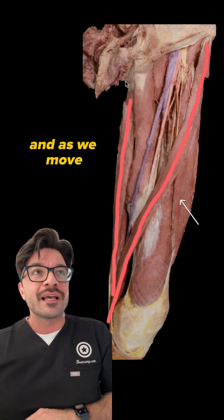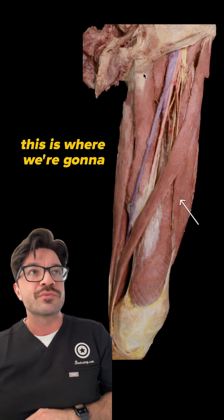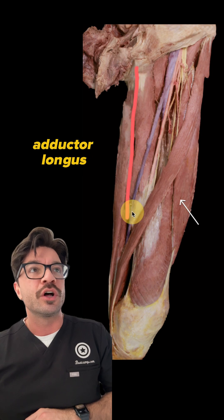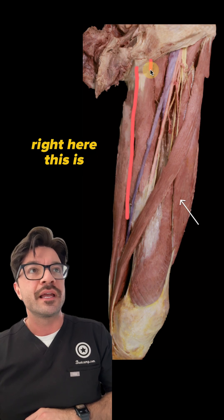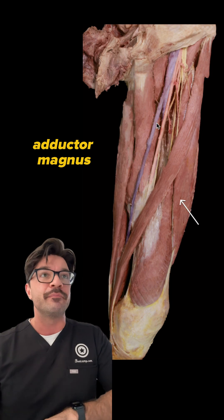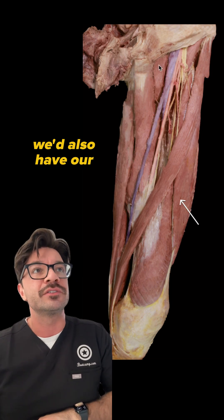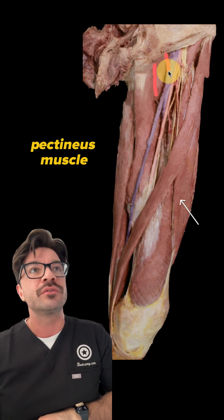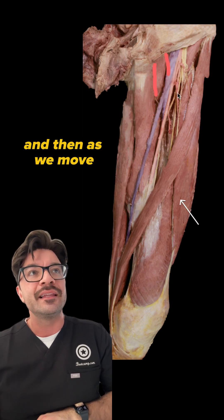And as we move more laterally, this is where we're going to have our adductor longus right here. This is superficial to the adductor magnus. We'd also have our pectineus muscle right here.